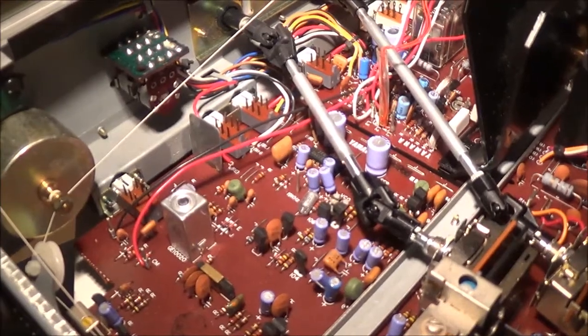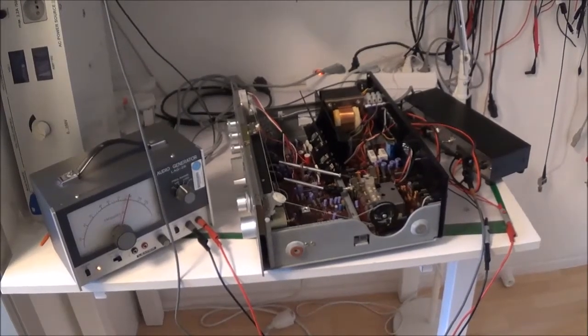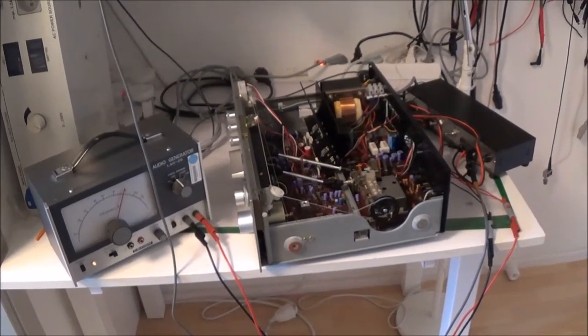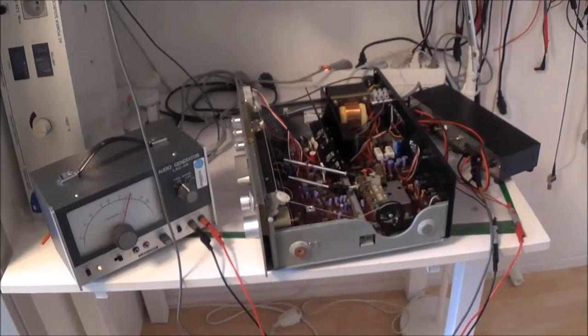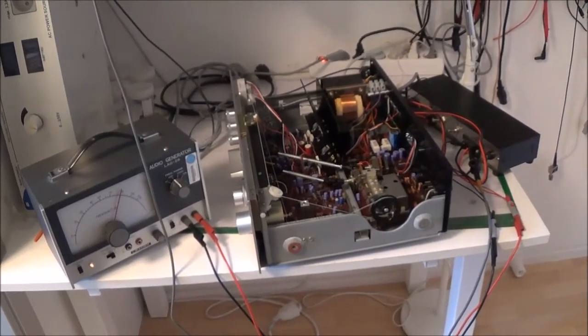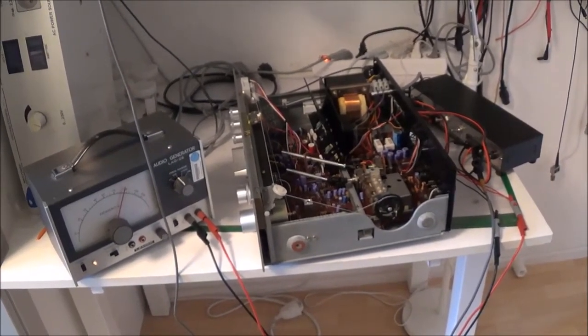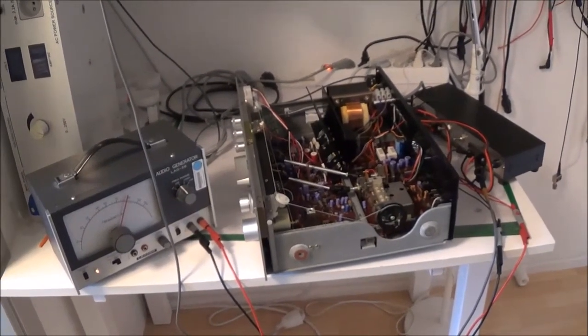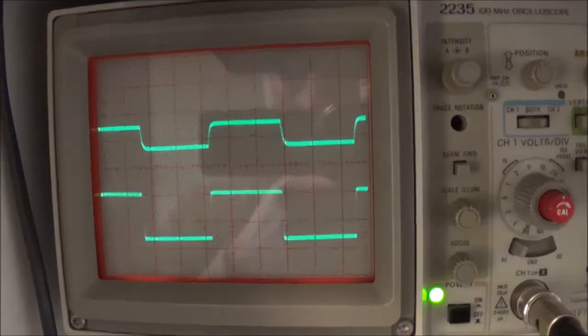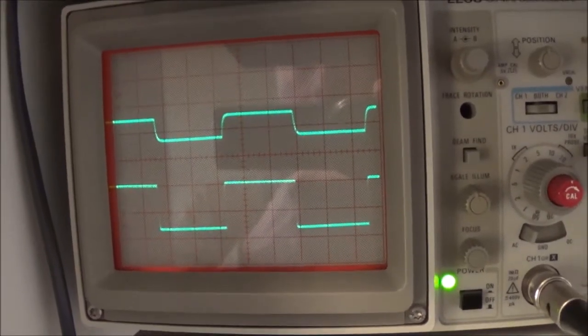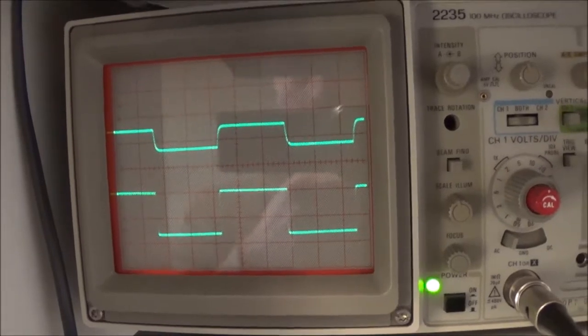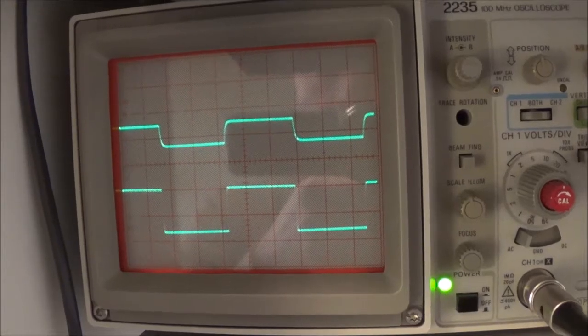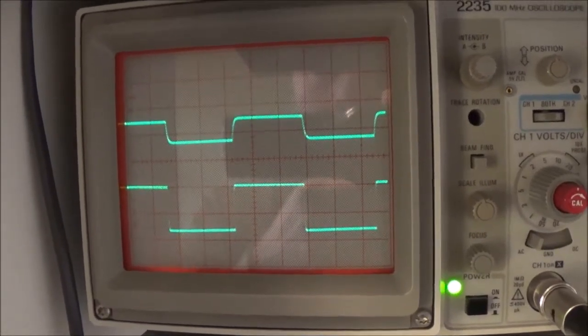I decided to hook up my audio generator and a dummy load and oscilloscope to just take a look at the output signal. Right now I'm feeding a thousand hertz square wave. Here you can see the output wave. This is actually both of the waves here, and you see one channel is about half the height of the other channel, and that seems to be the problem.